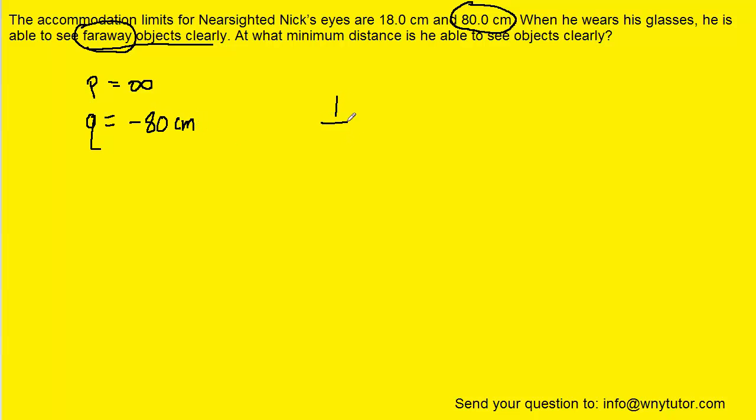We could turn to the thin lens equation and quite easily calculate the focal length of his glasses. Because the object distance is infinity, we're going to have 1 divided by infinity, and 1 divided by a very large number essentially goes to 0.